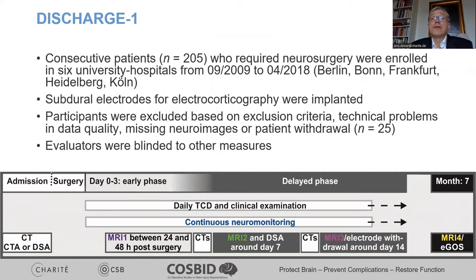DISCHARGE-1 was performed in several university hospitals in Germany from 2009 to 2018. 205 consecutive patients were recruited. Subdural electrodes for electrocorticography were implanted. 180 patients could be analyzed. The subdural electrodes allowed continuous neuromonitoring from day zero — the first 24 hours — to day 14. We also performed longitudinal neuroimaging with an initial CT, several later CTs, an MRI between 24 and 48 hours post surgery, a second MRI around day 7, a third MRI around day 14, and a fourth MRI at 7 months together with patient outcome assessment.